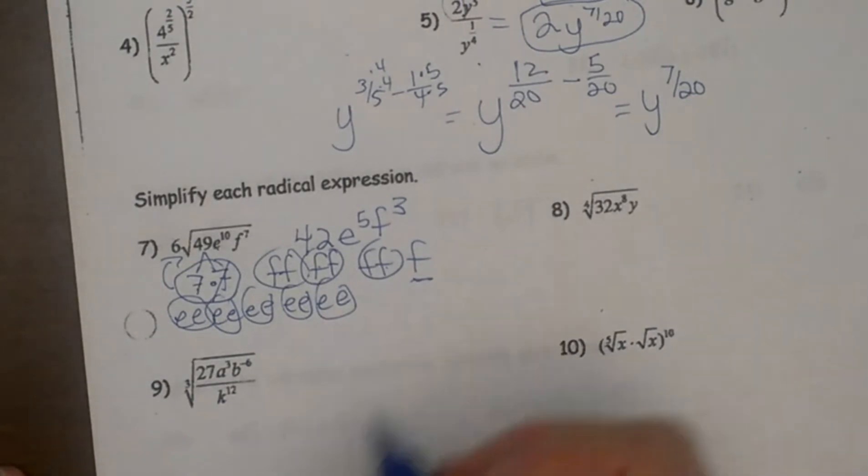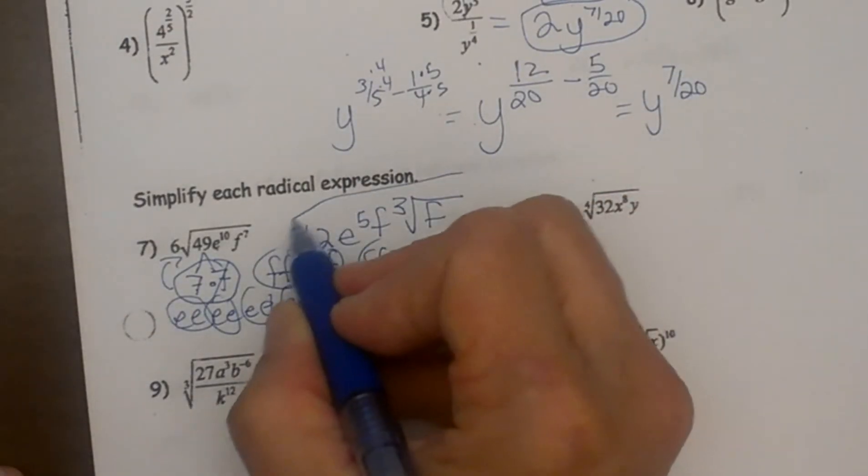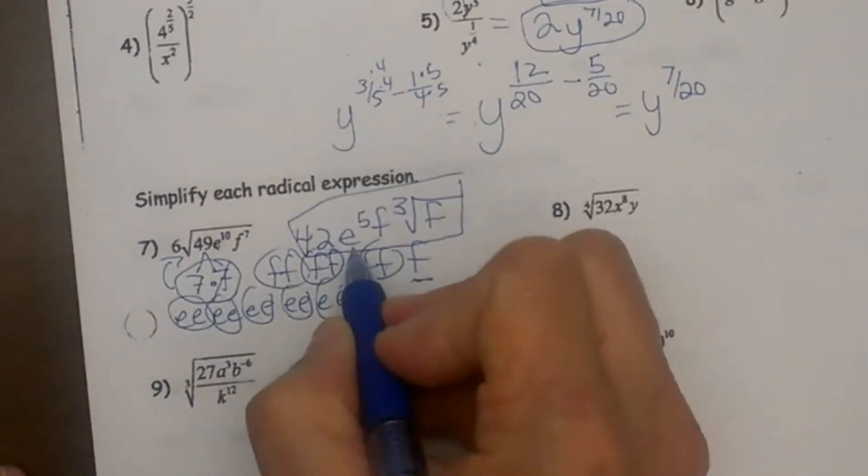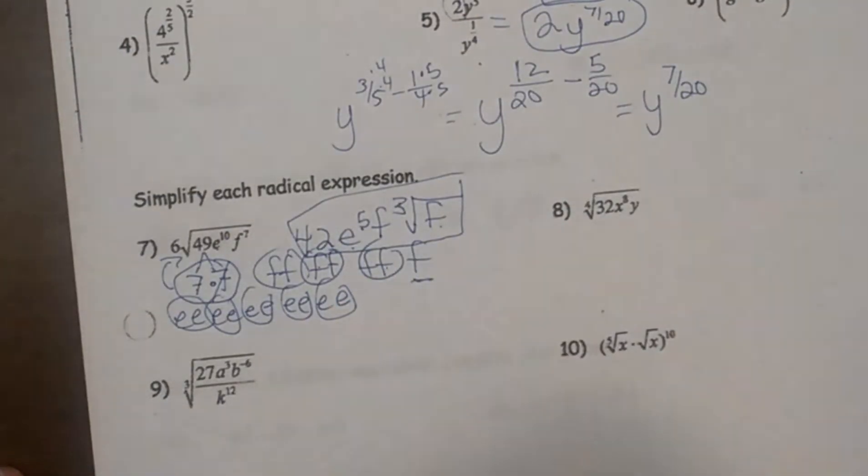But then what do I do with the f that does not have a pair? I am going to leave it under the radical. So the final answer is 42 e to the 5th f cubed square root of f.